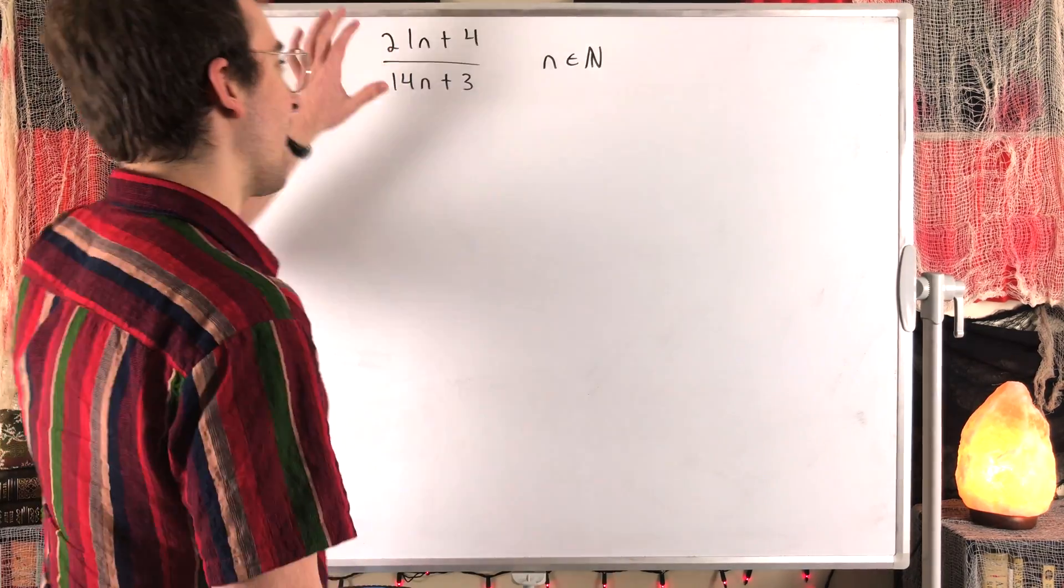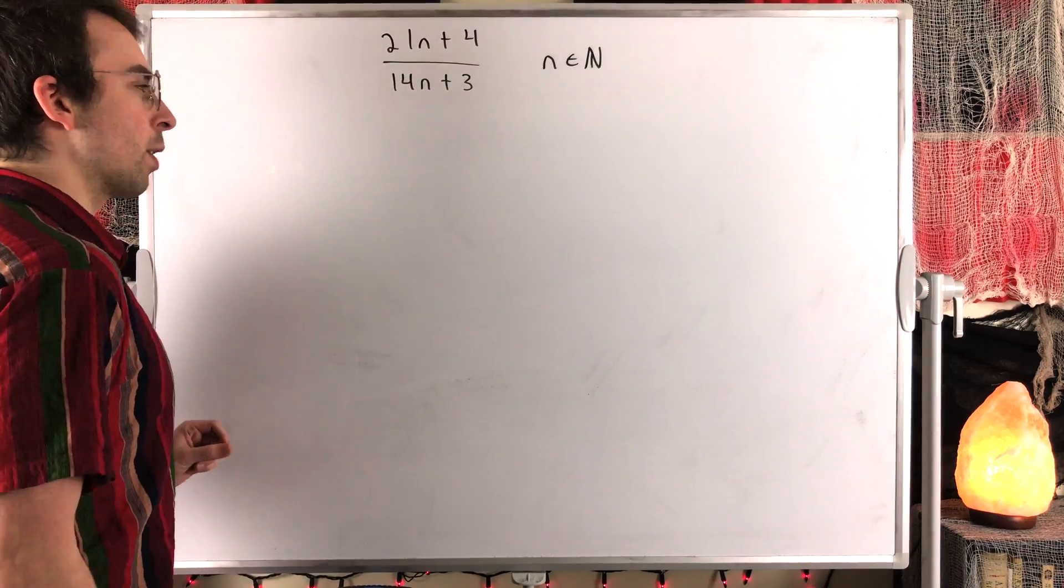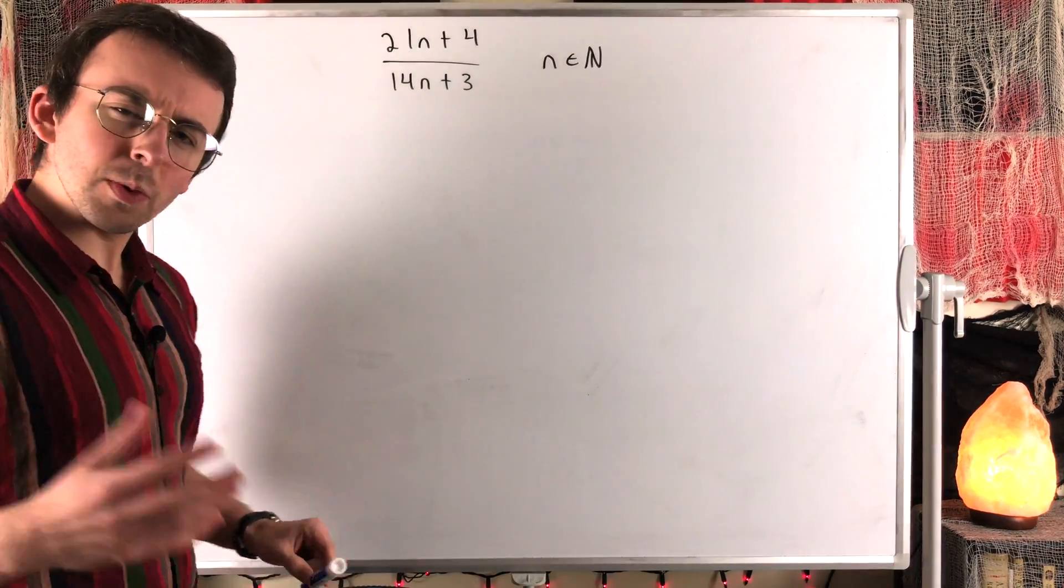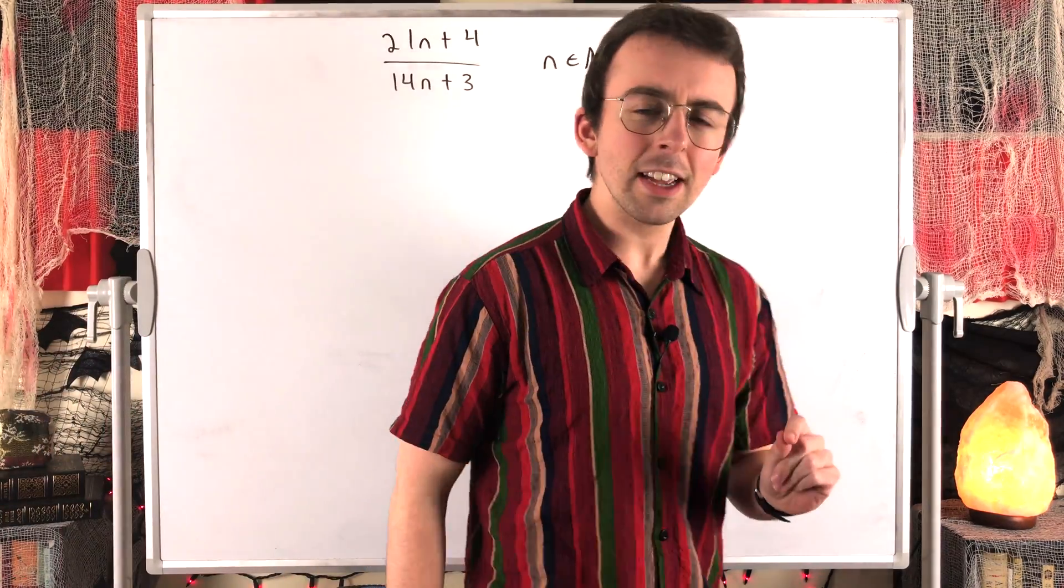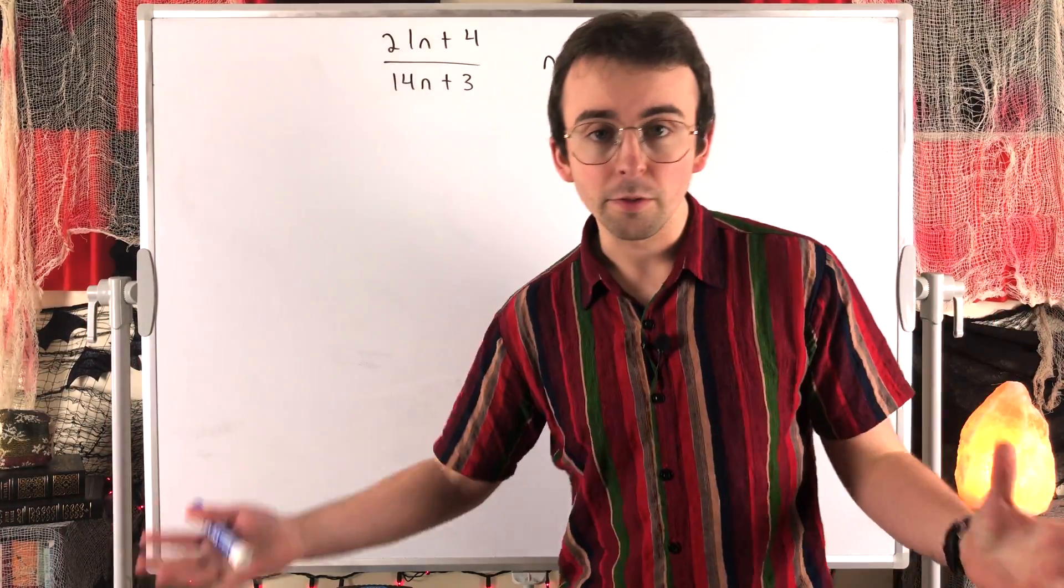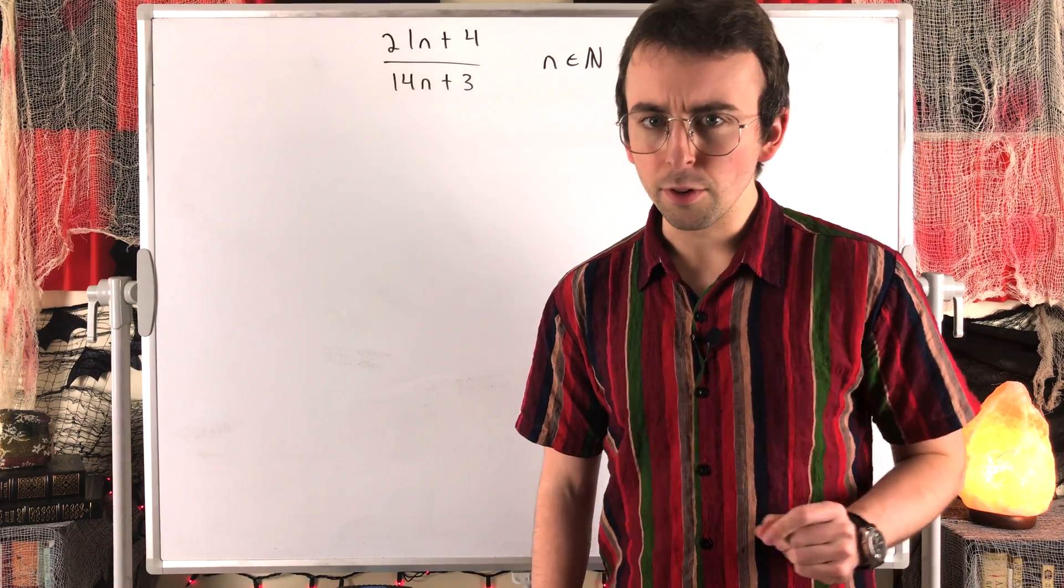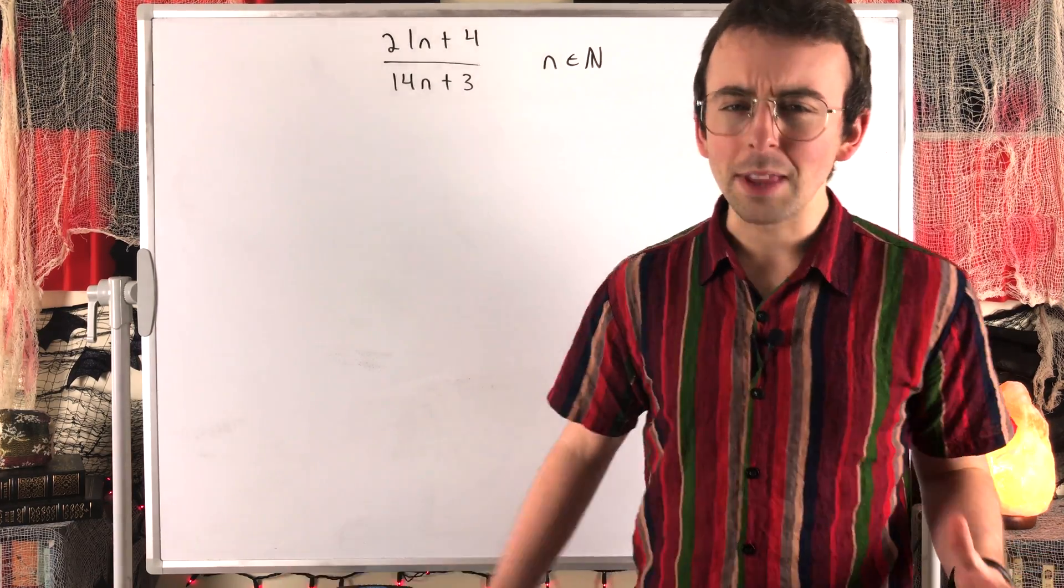It would give us an equal fraction, but with a smaller numerator and denominator. So we want to prove that we can't have that. We've got no common factor greater than 1 between the numerator and denominator. How are we going to do that? Well, in this case, I think the easiest path to take, there are of course a number of ways, but I think the easiest one is a proof by contradiction.